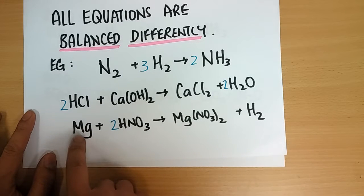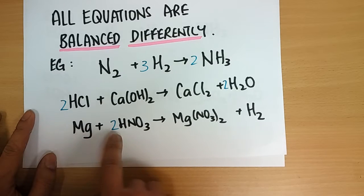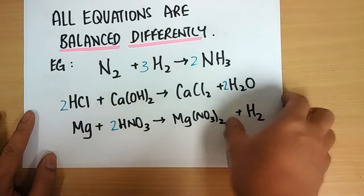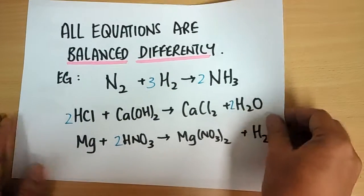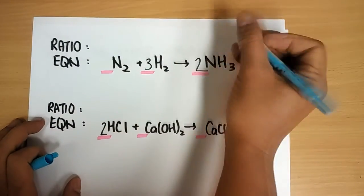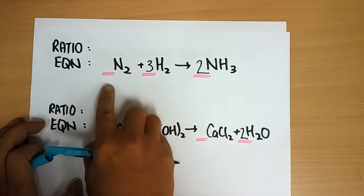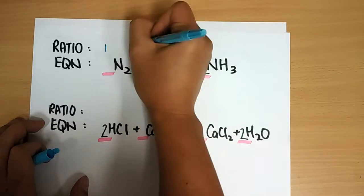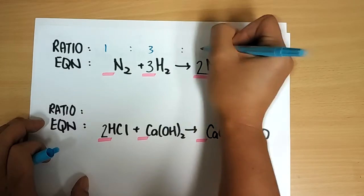Similarly for magnesium: Mg is 1, 2, 1, 1. So based on all the balanced equations, what we can conclude is we get a certain ratio. This ratio coefficient, the number in front, will give us a ratio: 1 is to 3 is to 2.